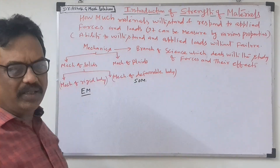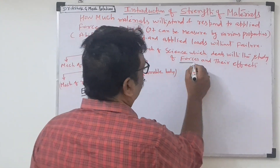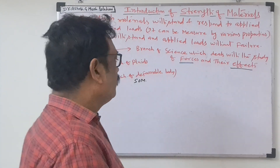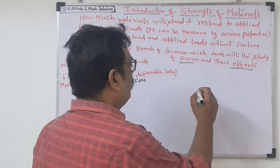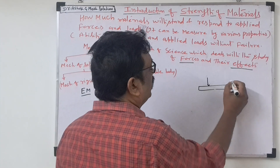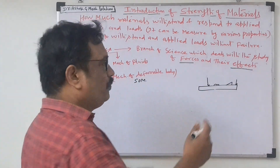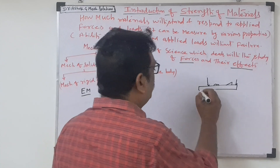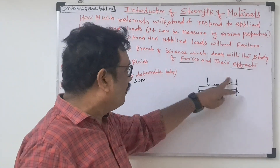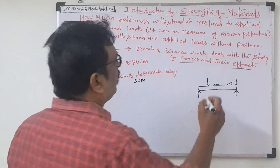Mechanics is the branch of science which deals with the study of forces and their effect. A force is applied to some body, and then the effect is studied. For example, in a building, a beam is there. On the beam some load will be there — point load, UDL load, varying load. These are the loads on the beam. Then there are columns which give support reactions. Here we study about the forces and their effect in strength of materials.